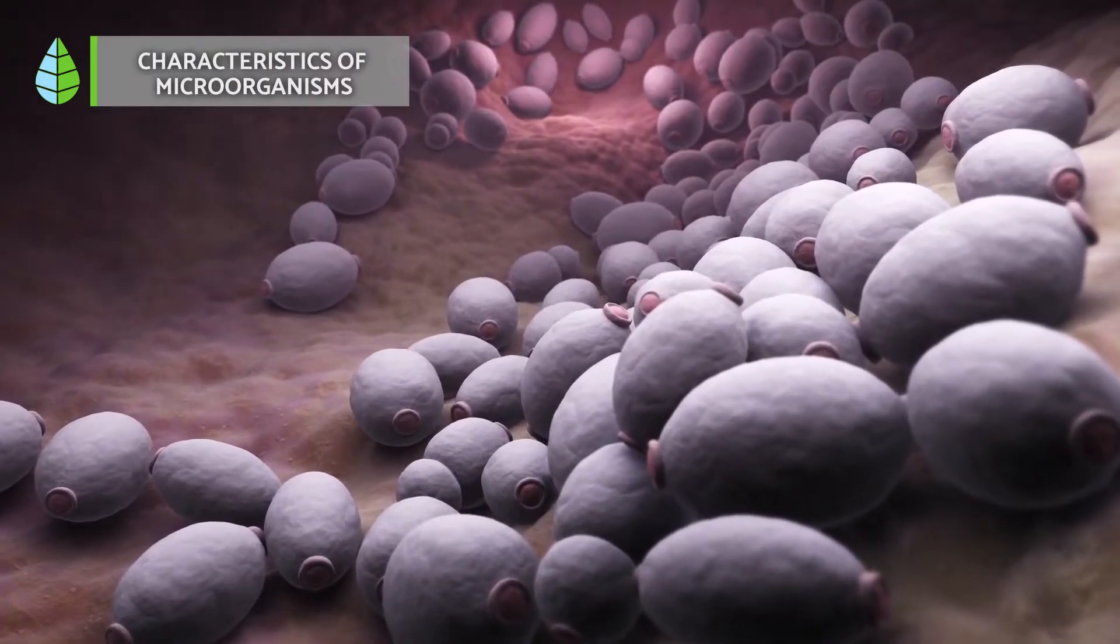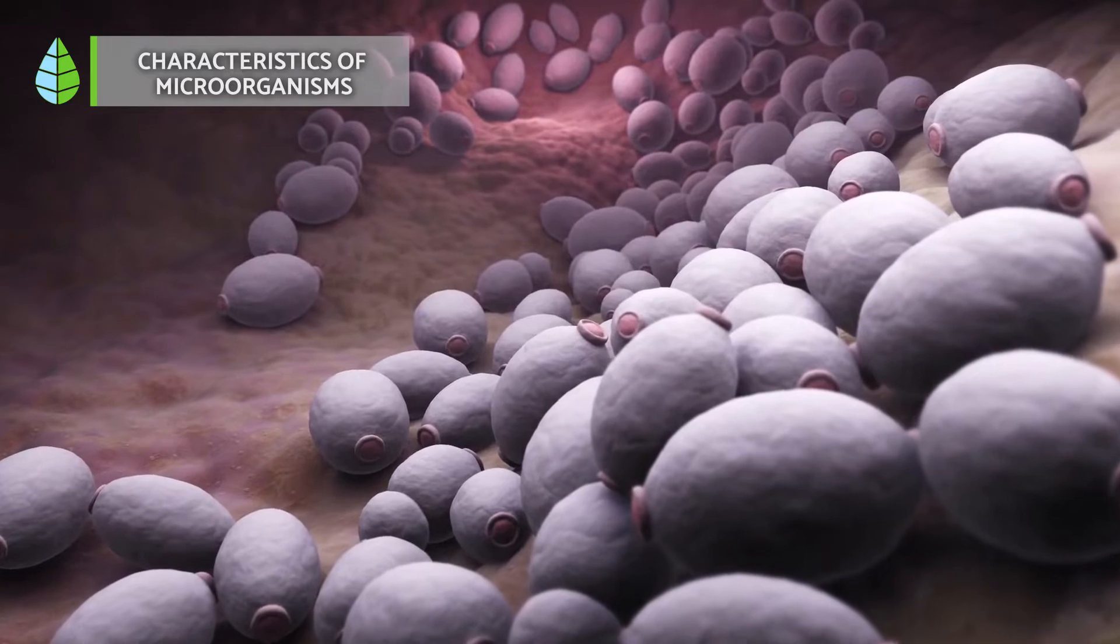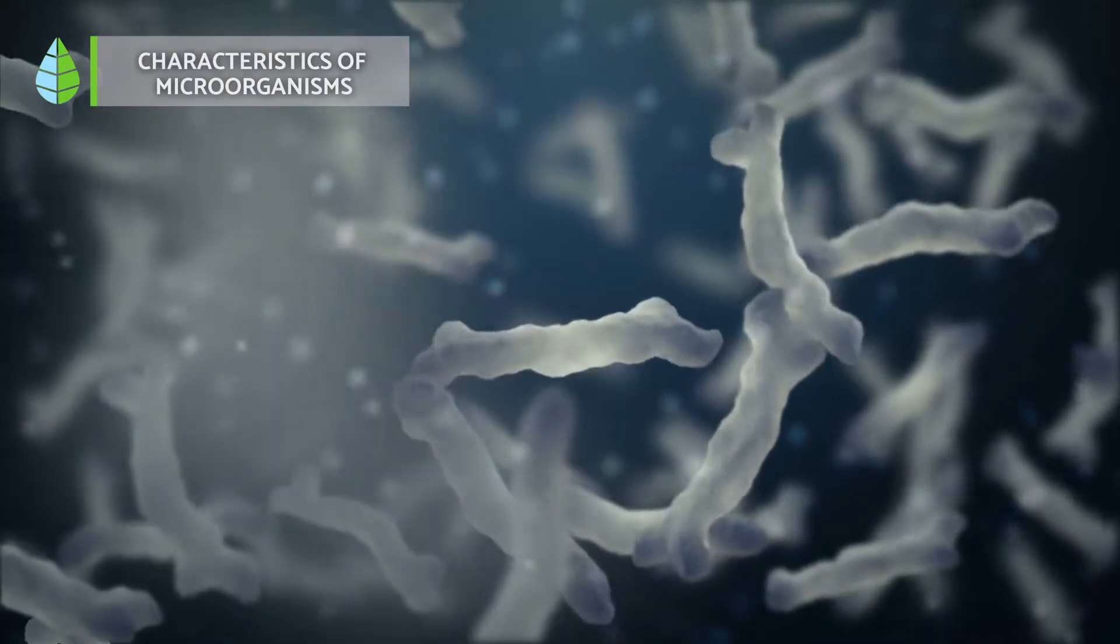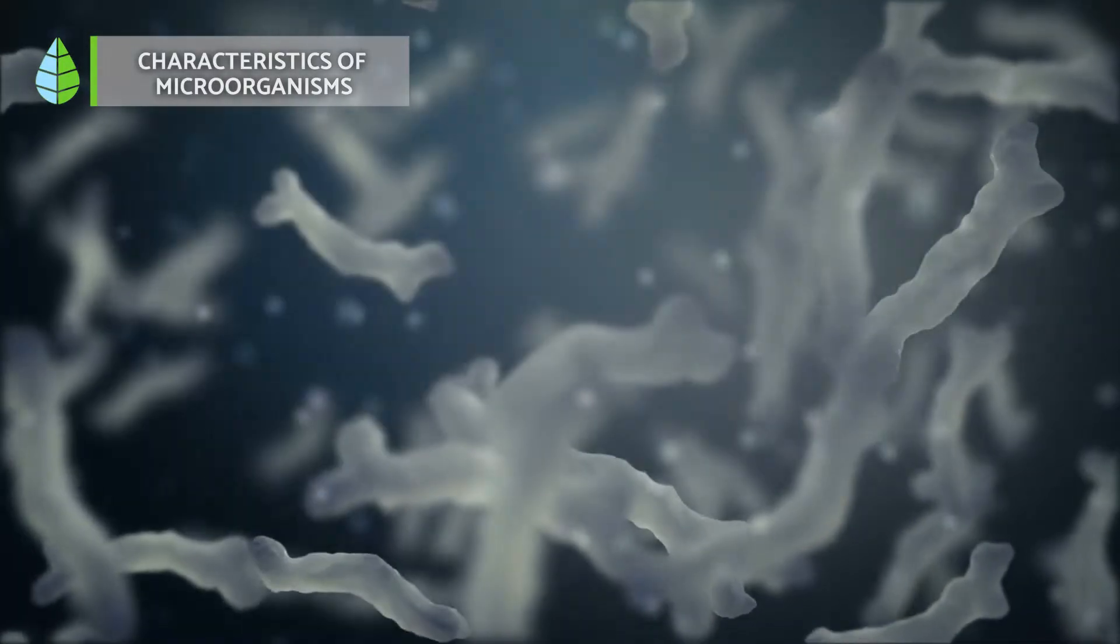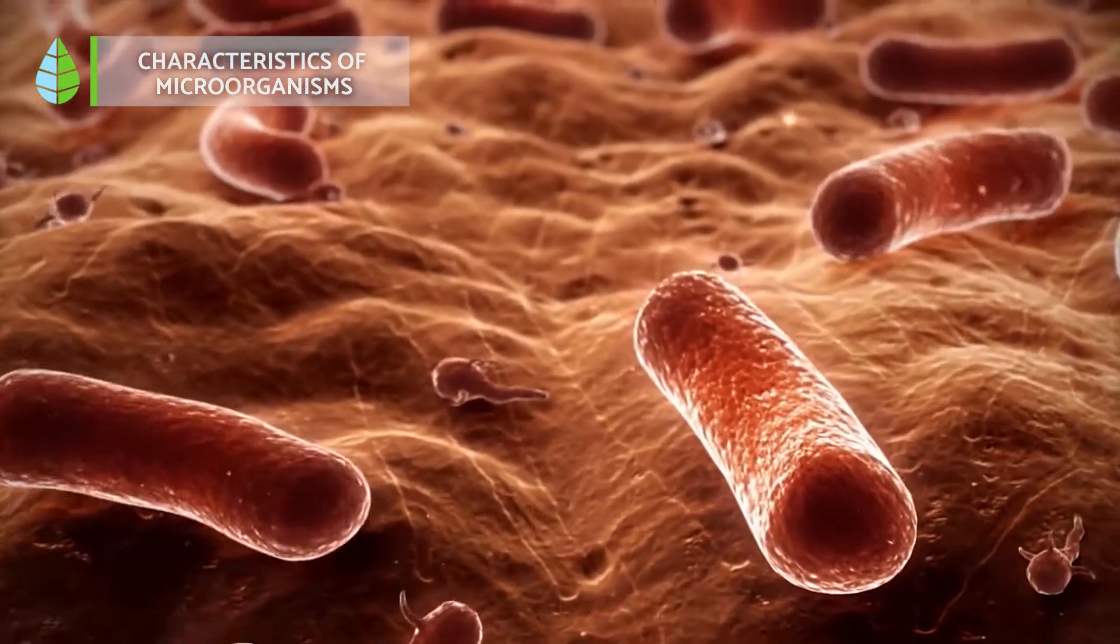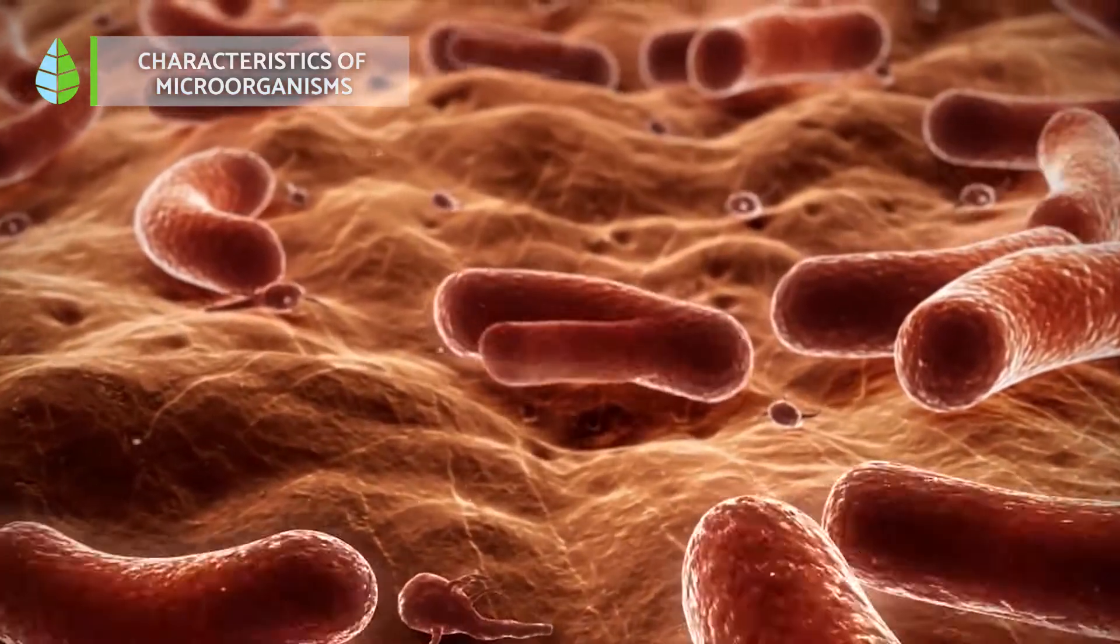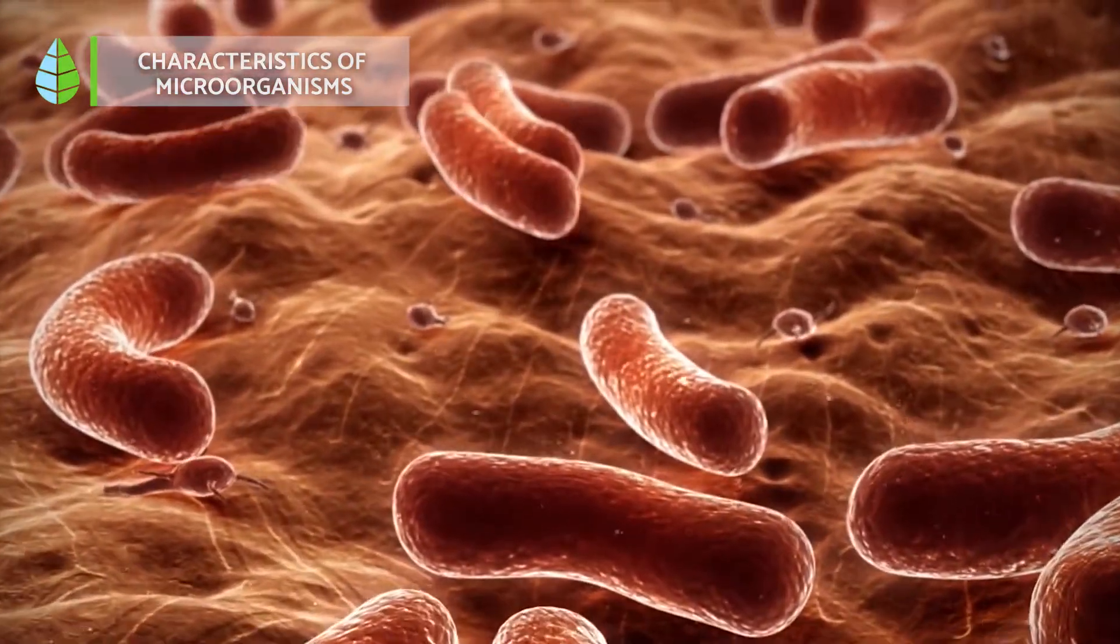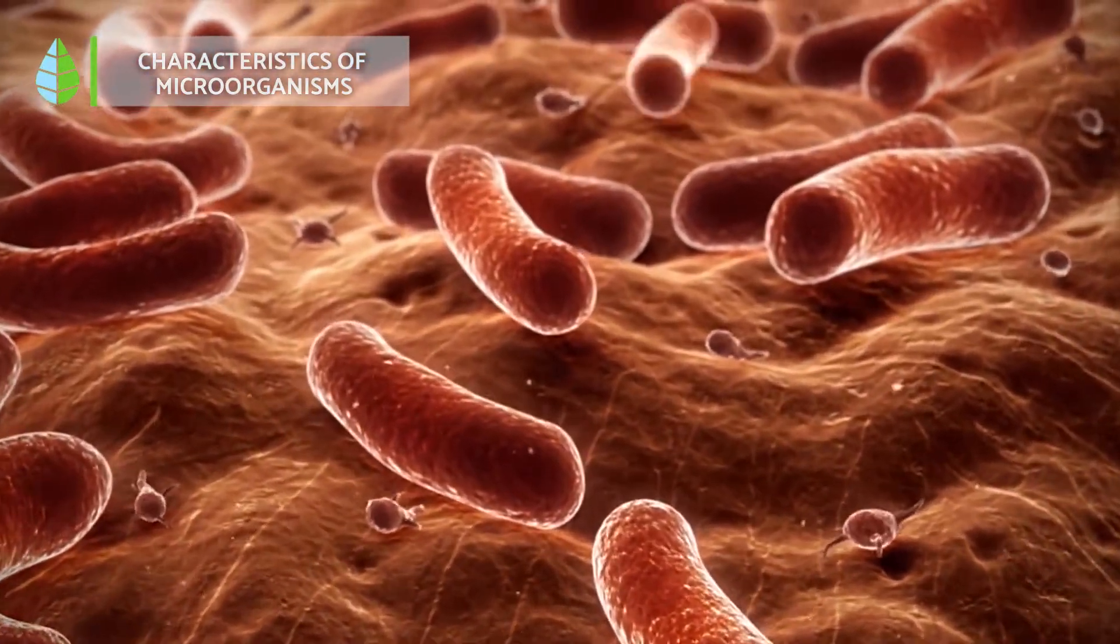Microorganisms have narrow pH tolerance ranges. We categorize them as acidophilic in acidic environments, neutral in neutral pH environments, or alkalophilic in alkaline environments.